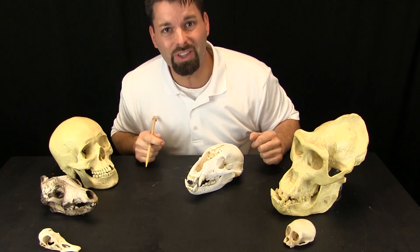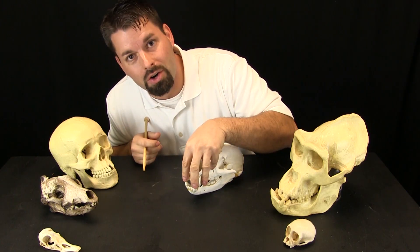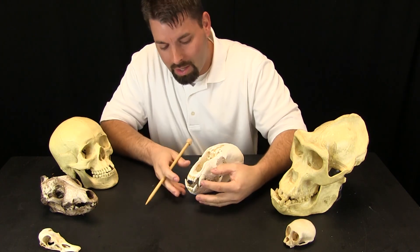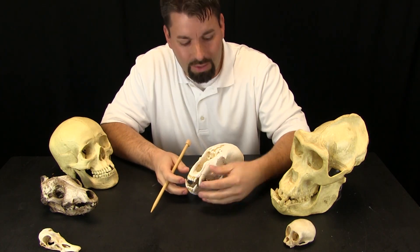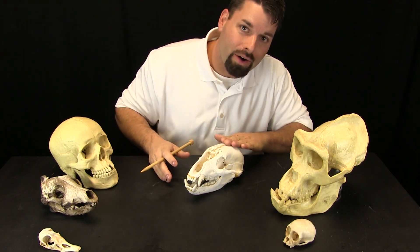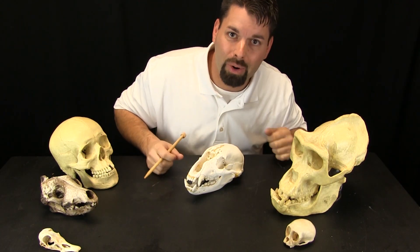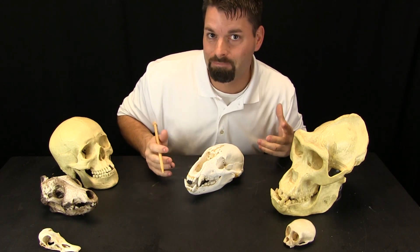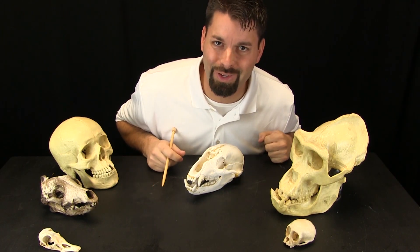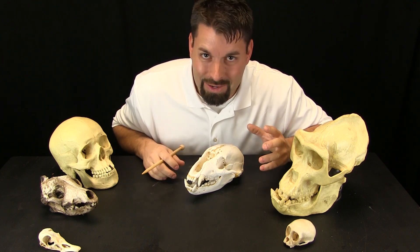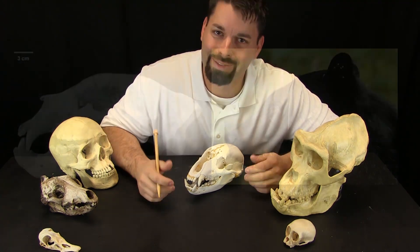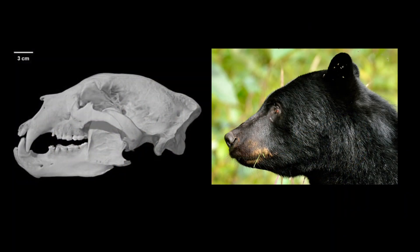Look at this skull. It has a longer nose, big teeth and a flatter part of the top part of the skull. What animal do you think it is? Take a look at this side by side comparison to find out that this guy is a black bear.